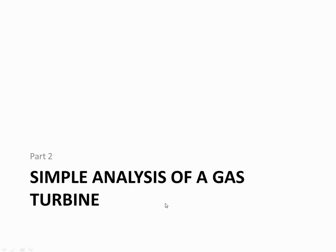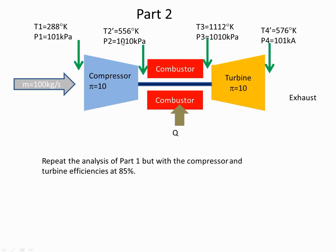This is part two of our simple analysis of a gas turbine engine. In part one we had established the ideal temperatures and pressures at the output of the compressor and turbine, and now we're going to see how they're modified when we take into account the efficiencies of the turbine and the compressor respectively.